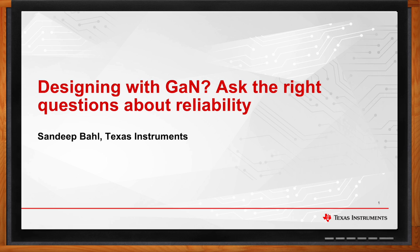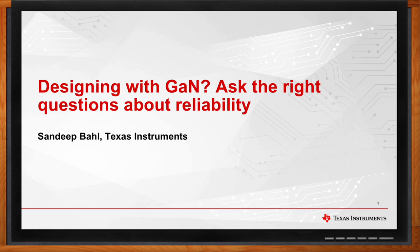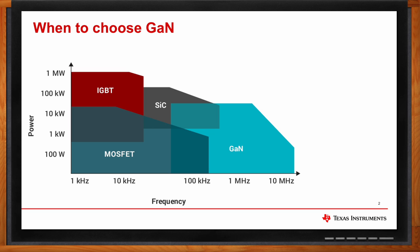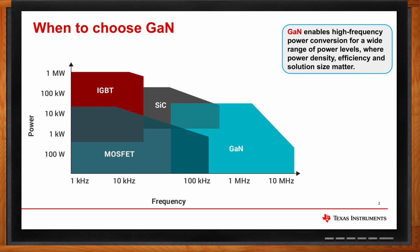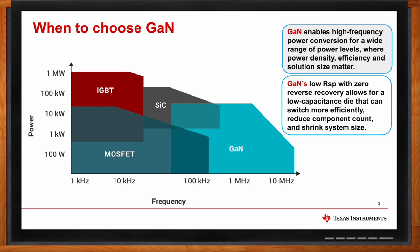With several types of power semiconductor devices like silicon IGBT, silicon power MOSFET, silicon carbide FET, and GaN FET, how would a power supply designer know which device to choose for their application? A power supply designer would look at a graph showing the sweet spot of each device type as a function of power on the y-axis and frequency on the x-axis. The designer would choose GaN if they wanted to shrink their solution size by running at high frequency and obtain high efficiency. GaN is used for a wide range of power levels, and it has good device properties like low specific on resistance and no reverse recovery. These excellent properties allow for a low-capacitance style that can switch more efficiently, reduce component count, and shrink the system size.